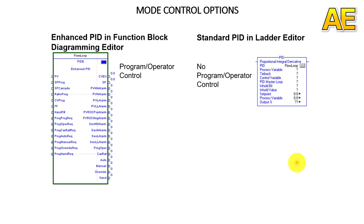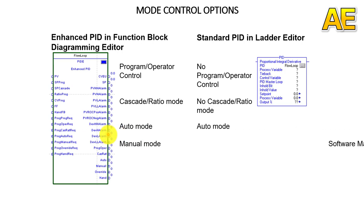Program or operator control guarantees the correct access at the right time. In the PIDE block, we have pins for mode requests. The first is ProgProg — a program-generated request to go to program control. And ProgOper — a program-generated request to go to operator control. Next, mode requests for cascade, ratio, auto, and manual are also available.